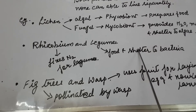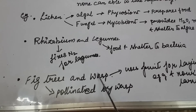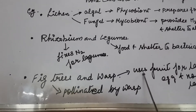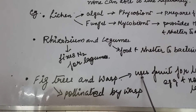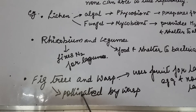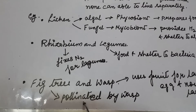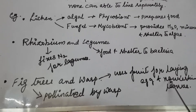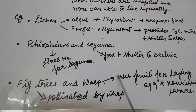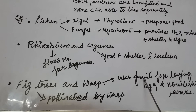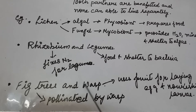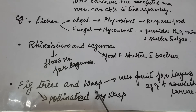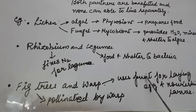Another example is the interaction between fig trees and species of wasps. A pollinator species of wasps pollinates these fig trees, and these wasps use the fruit of fig trees for laying eggs and for nourishing their larvae. The wasps pollinate the fig inflorescence while searching for suitable egg-laying sites. In return, the fig trees offer the wasps some of the developing seeds as food for developing wasp larvae.